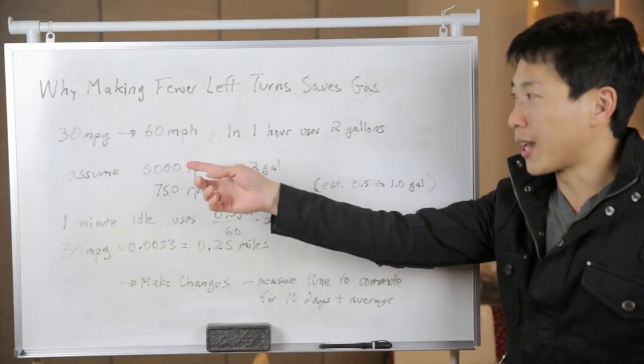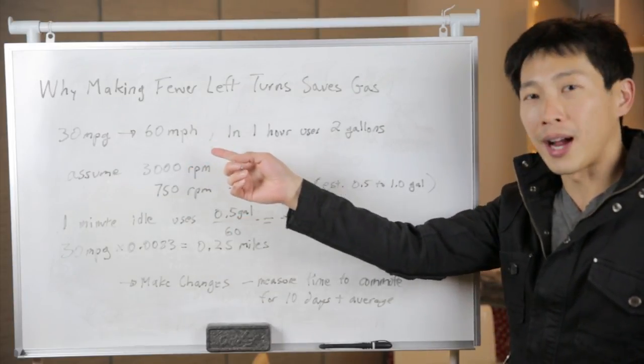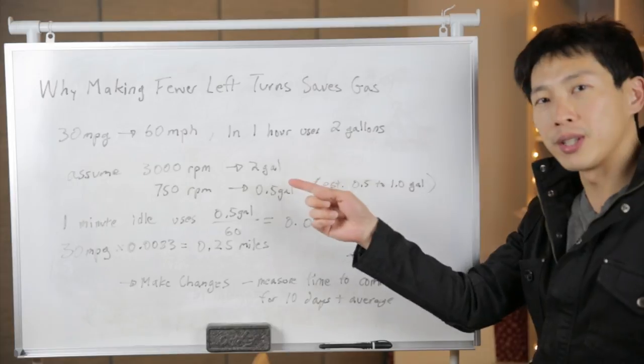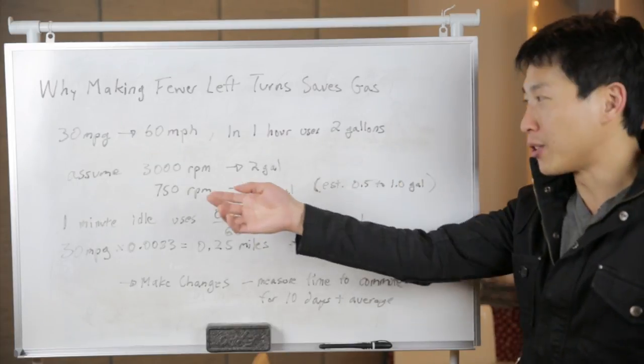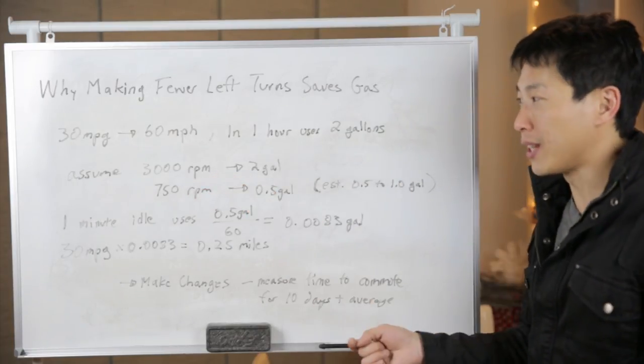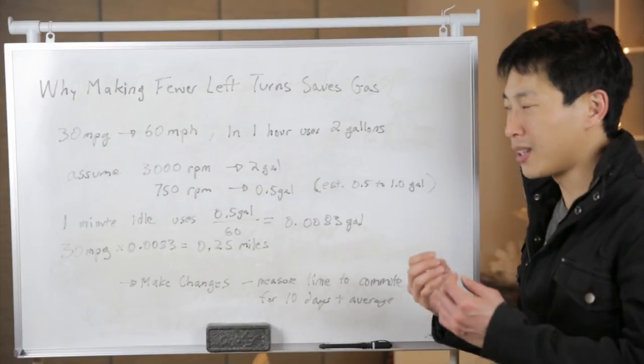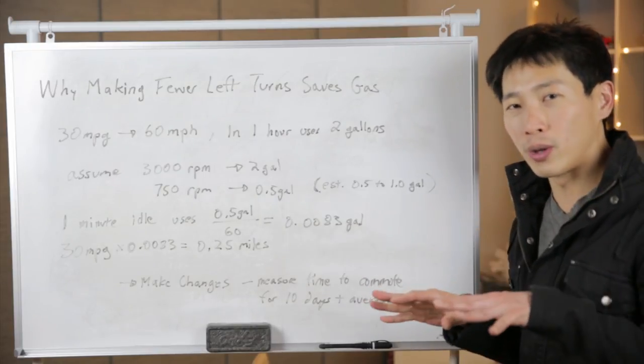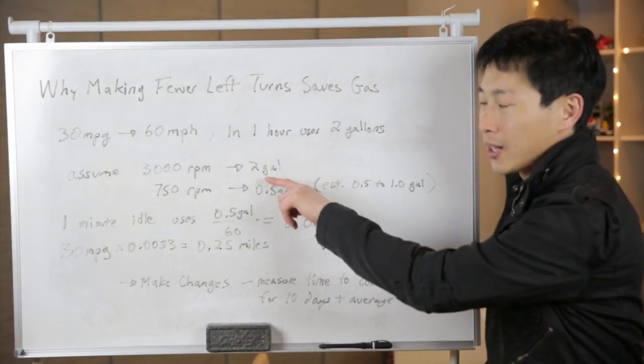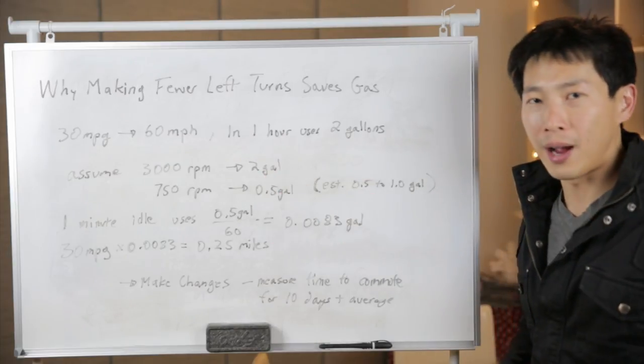Let's say your car gets about 30 miles per gallon and you're driving at 60 miles per hour. So in one hour, it's going to use two gallons of gasoline and your engine is running at 3000 RPM. I know the load is going to be a little different, but we're going to do a really rough estimate right here that it's going to consume about two gallons per hour.